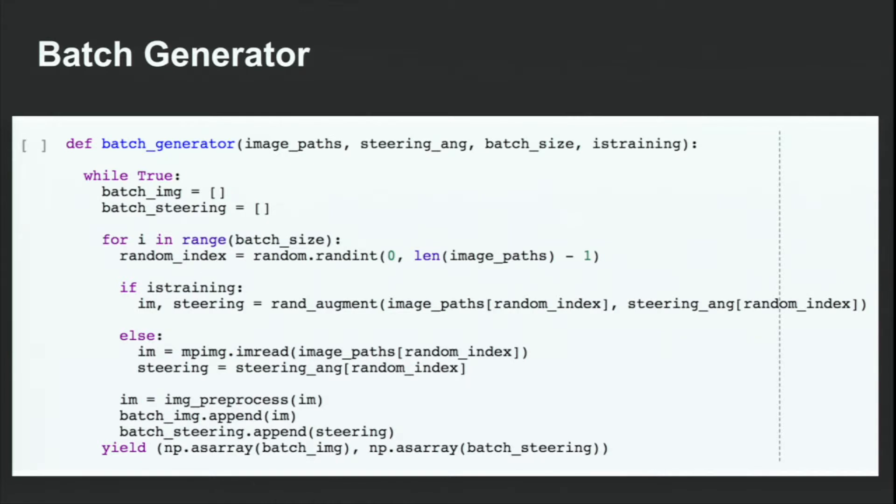That would take up a lot of memory space, and it's just a lot more for the model to handle, and it's unnecessary. Therefore, we use the batch generator, and what the batch generator does is it randomly generates a batch of augmented images every time the model needs them during the training, and only when the model needs them during the training. Immediately after, it destroys all of the images so they take up no memory space.